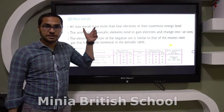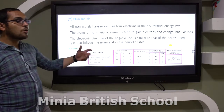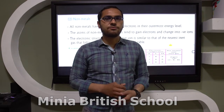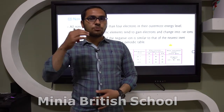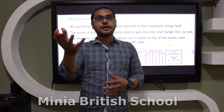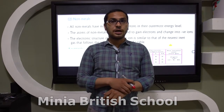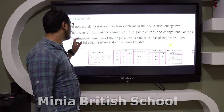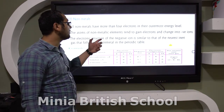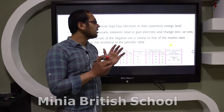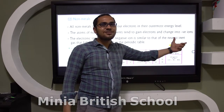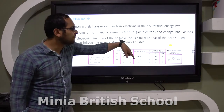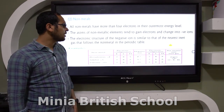Now let's study the non-metals. All non-metals have more than four electrons in their outermost energy level, and they tend to gain electrons and change into negative ions. The electronic structure of the negative ion is similar to that of the nearest inert gas that follows the non-metal in the periodic table.